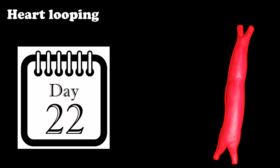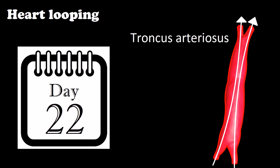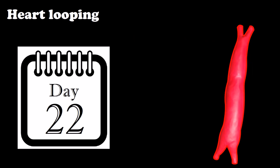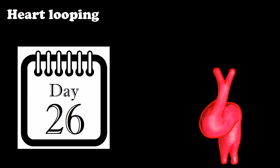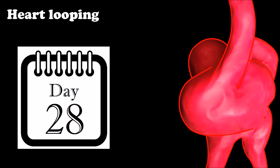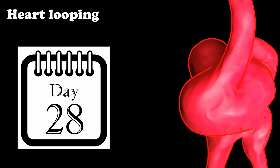The embryonic heart starts functioning from the fourth week, pumping blood from the sinus venosus to the truncus arteriosus. Simultaneously, the cardiac tube begins to elongate and rotate on its own axis until it remains folded in an S-shape, allowing the main cardiovascular structures to acquire a position similar to the adult heart.